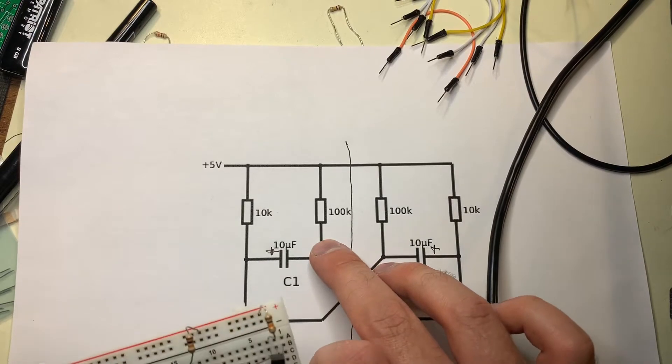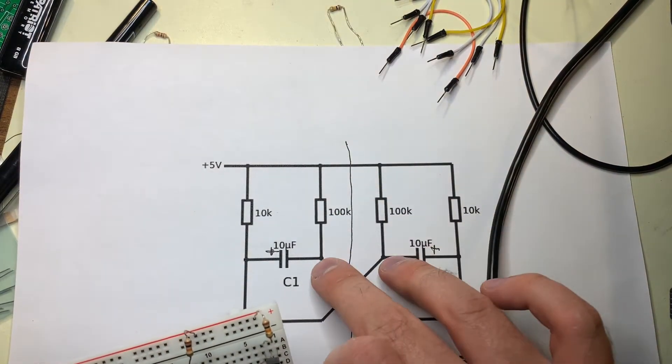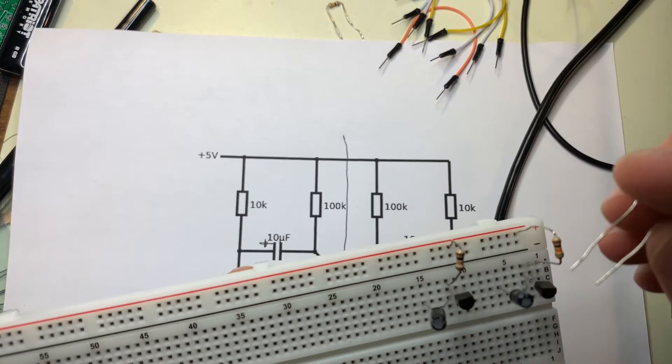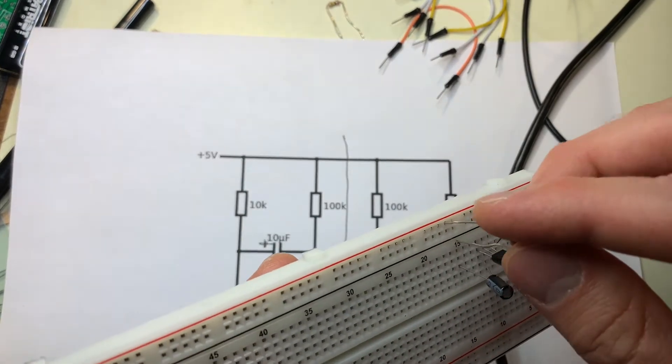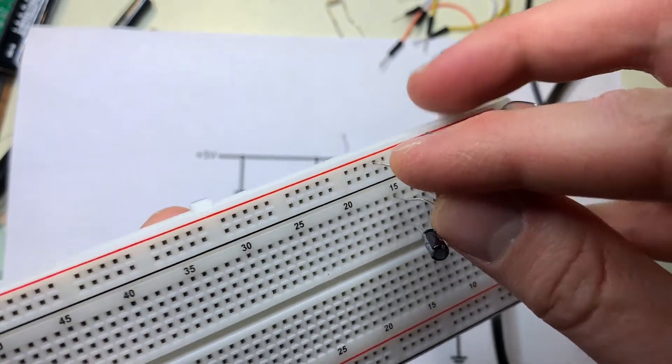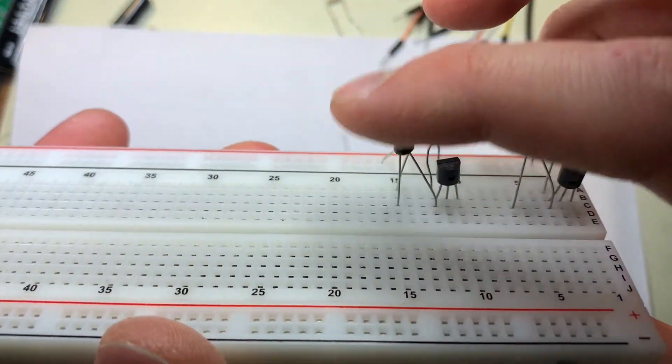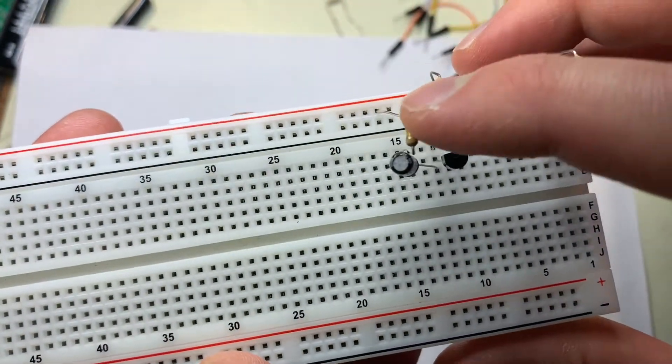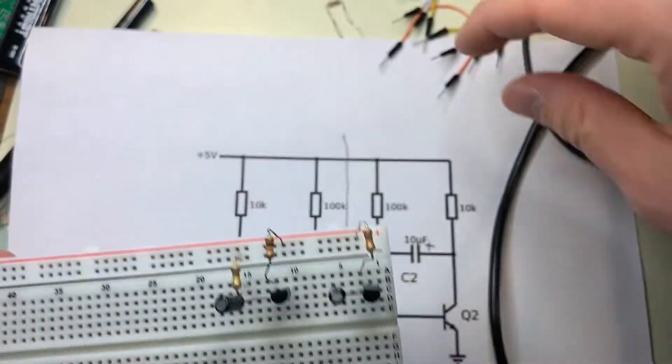Now for the 100k's, they go from the positive rail to the negative end of the capacitor. So we can take our positive rail there, and put it on the same row column as the negative of our capacitor. Just like that. And the same for the other side.